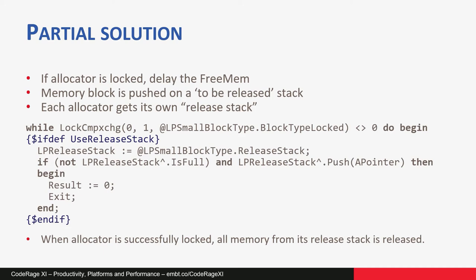Not really solved though, because now we've just moved the problem down another level — this to-do list must again be thread-safe. It must be locked to prevent errors when two threads try to put memory on the list at the same time. But in this case, we only have to lock a very small piece of code for a very short time — just to store one pointer on the list. Because of that, the possibility of collision is much smaller and the code executes much faster.